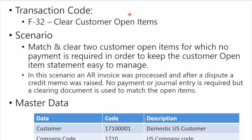In the previous lesson you learned how to post an incoming payment and match it to clear an open item or invoice. The difference with this next transaction — F-32 — is that you use it to match two existing open items that just need to be cleared with no new payment. The scenario is we've got two customer open items and no payment is required, but we want to keep the customer account easy to manage.